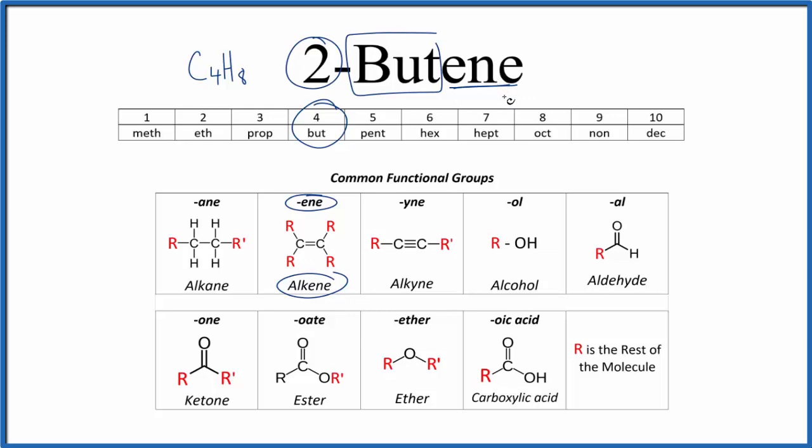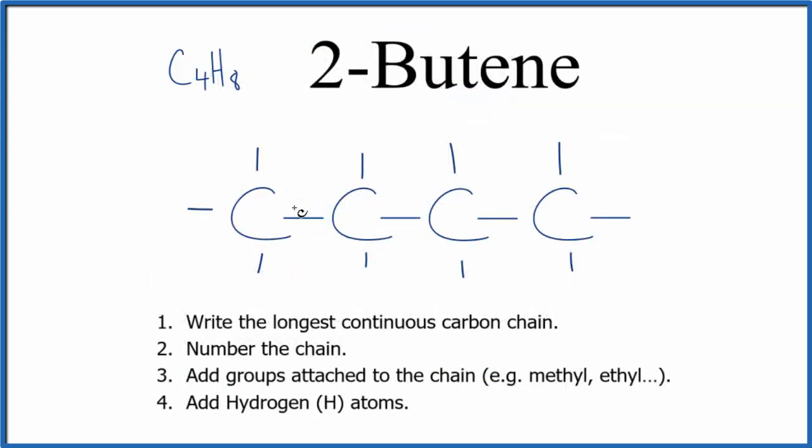So let's start with four carbons in a chain. Right now we have four carbons in a chain with single bonds. That makes this an alkane. This is butane.